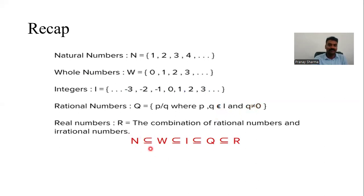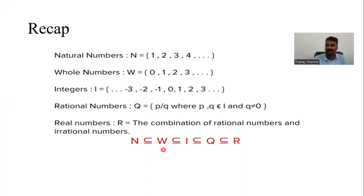This particular symbol represents subset. Subset means — suppose we have natural numbers from one going to infinity, but if I have taken one and two out of one, two, three, four, that is actually a subset of the bigger set. So natural number is a subset of whole number, because whole numbers start from zero. Whole numbers are a subset of integers. Integers are a subset of rational numbers. Rational numbers are a subset of real numbers. So real numbers are the combination of rational numbers and irrational numbers.